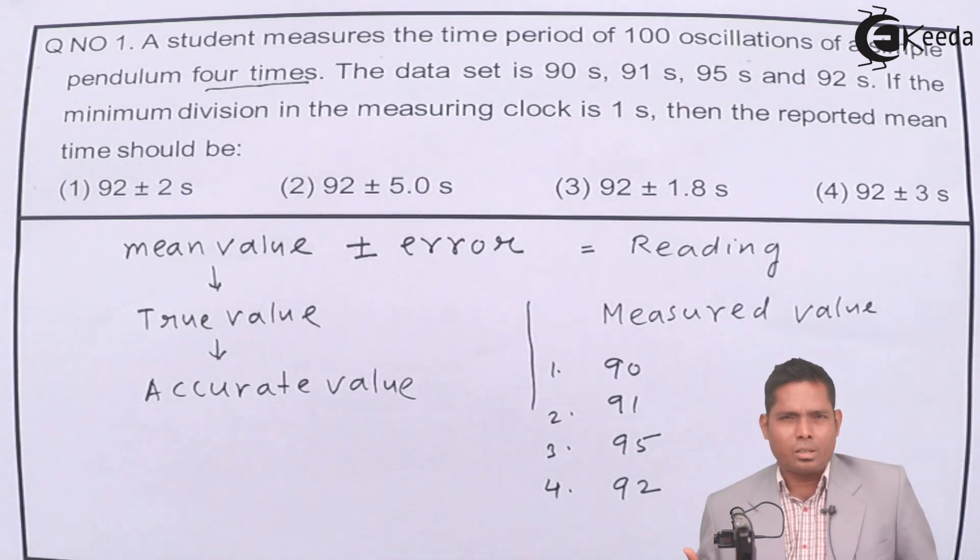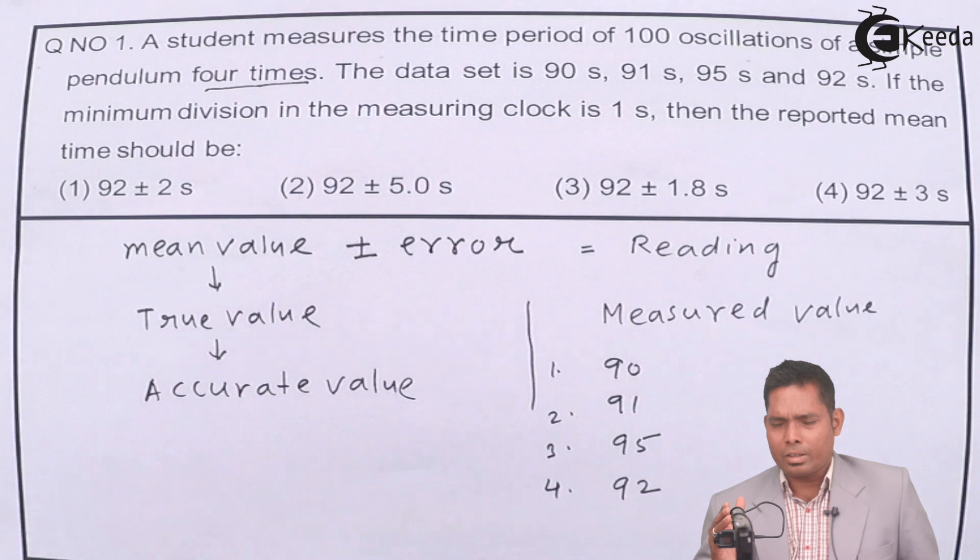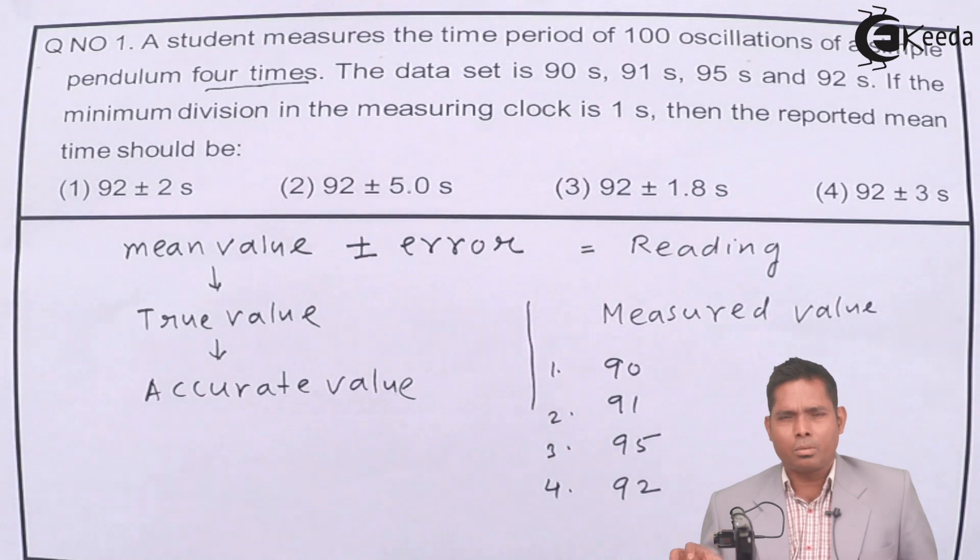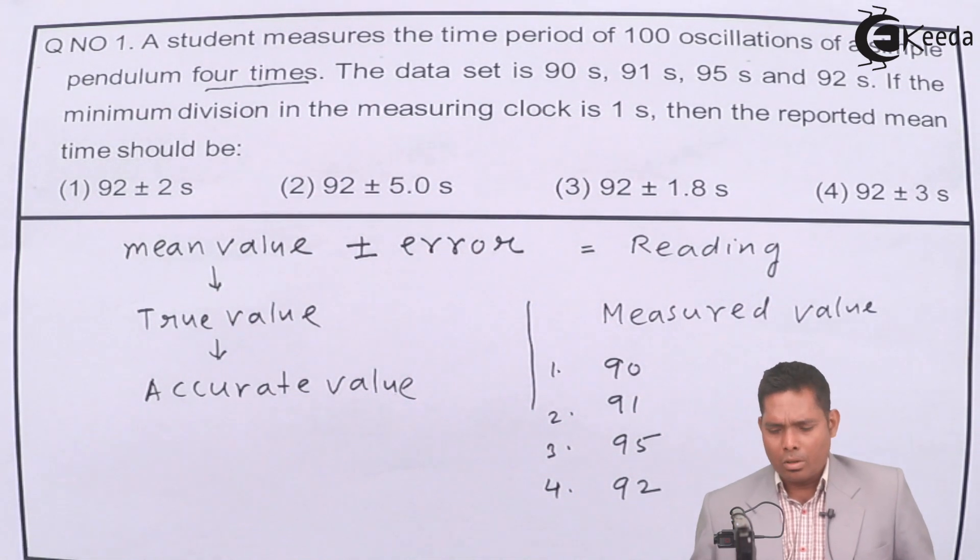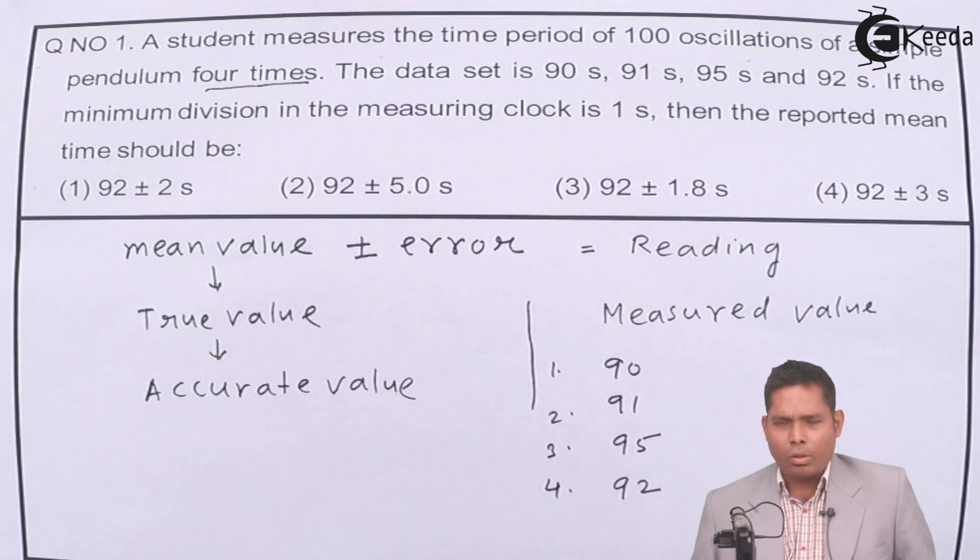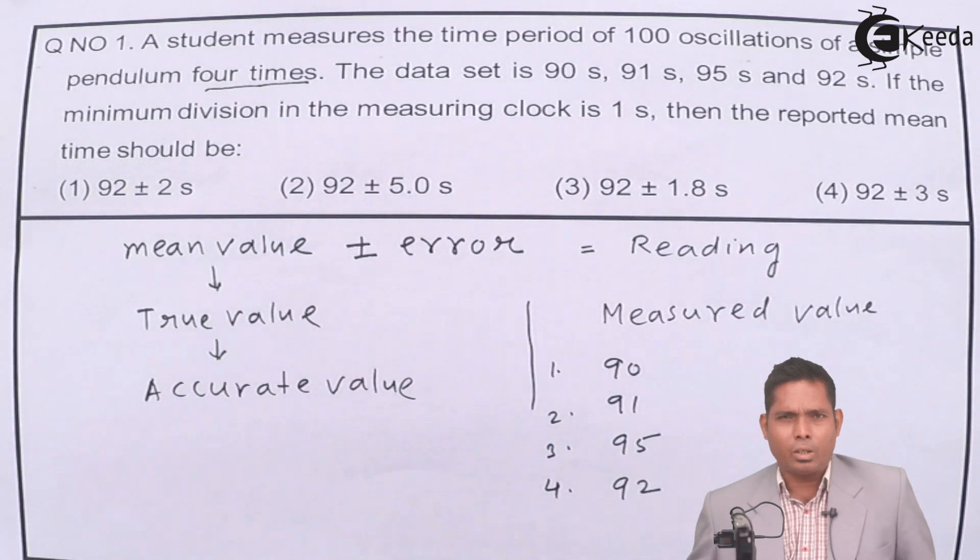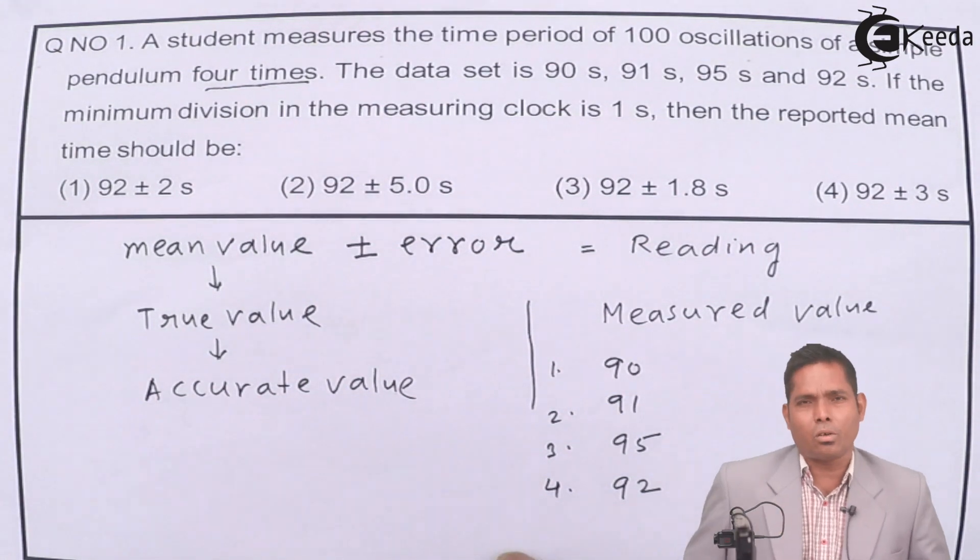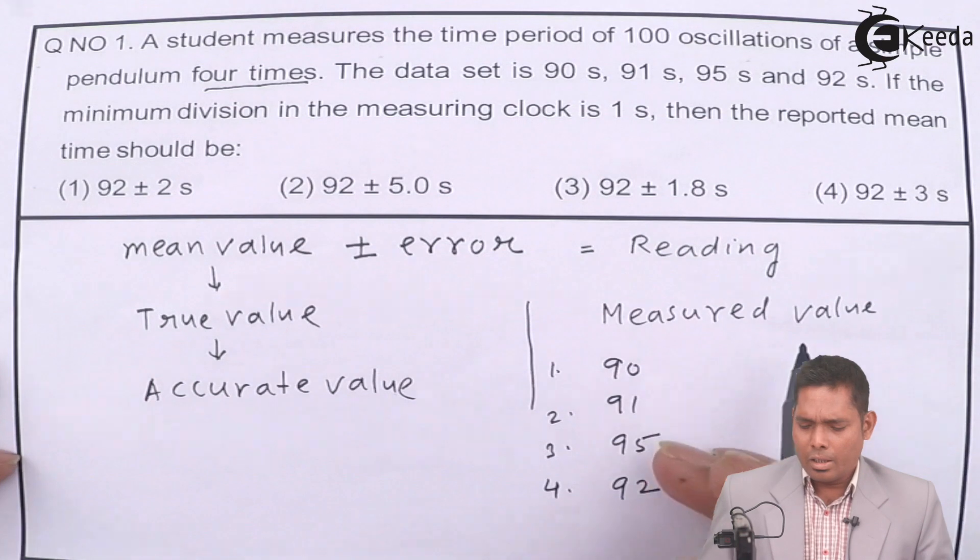It might be little less than that. Because when the pendulum comes to the extreme starting point again, when you stop the watch, it doesn't necessarily stop at the time when the bob is there. It might be little late or it might be little early. It might be exact, but we don't know. So there must be some error introduced when you stop the watch when the oscillations are made.